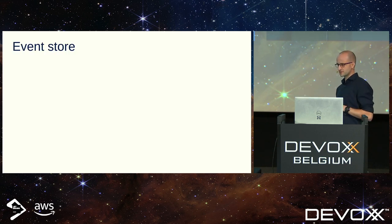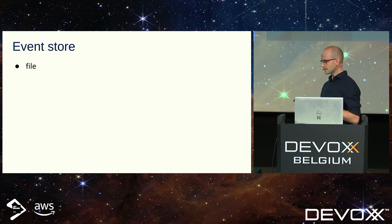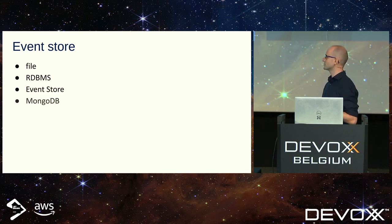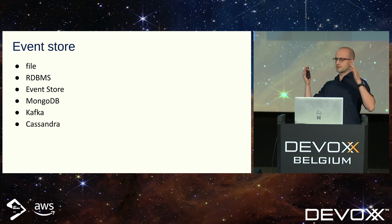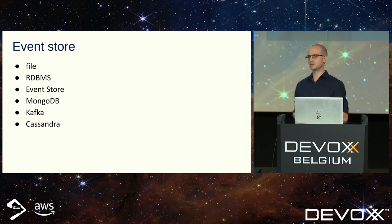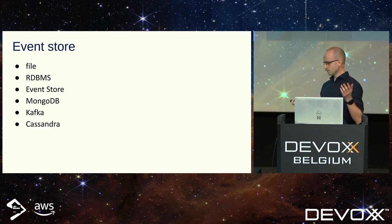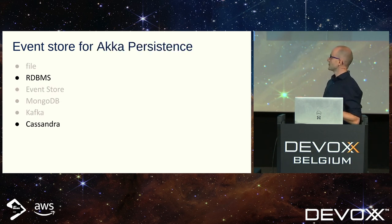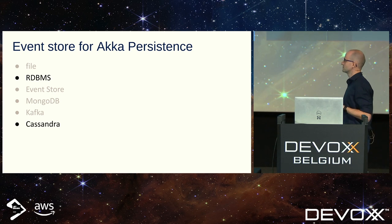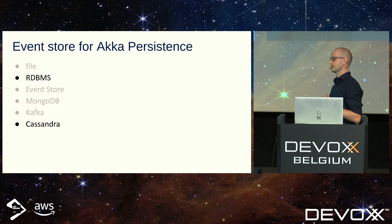The next big question: where to store events. We can store them in a file, in a relational database, an event store, MongoDB, Kafka, Cassandra, etc. Storage selection depends on the previous choice — if you go with custom implementation, you can use any database. If you go with Akka, your choice is limited to roughly a single-host relational database or a distributed database like Cassandra. A relational database sounds like a safe choice — everyone knows how to set it up and maintain it even in production. But vertically scaling a single-host database might become a problem sooner than you think.